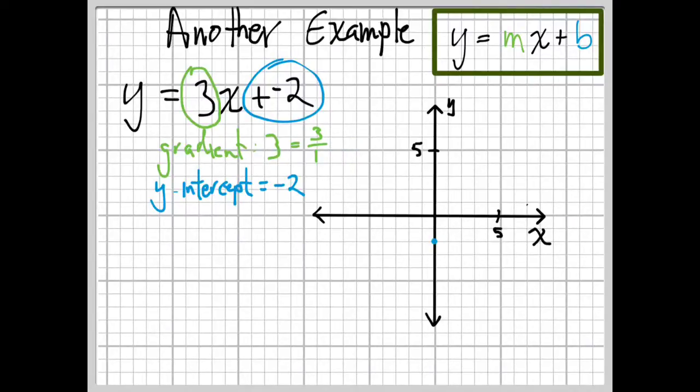We go from our point down here and we go up 3 and over 1, and we plot a point there. We have our two points. So, we use our straight edge and draw a line between those two points, and we're done.